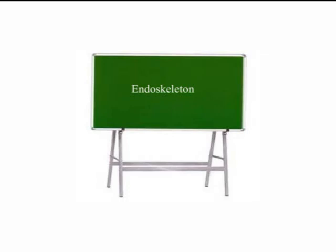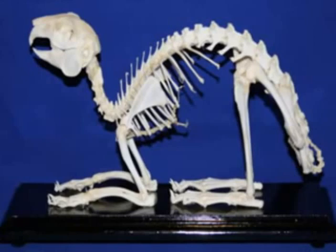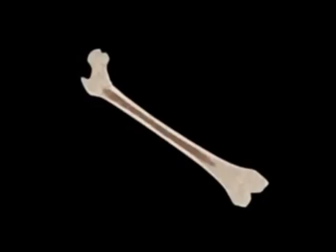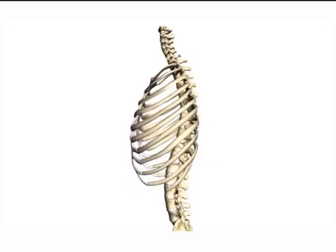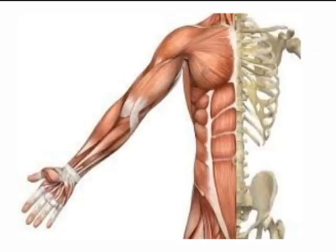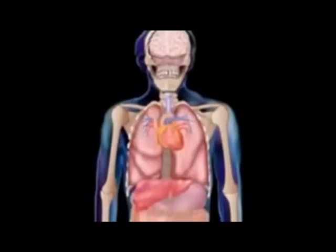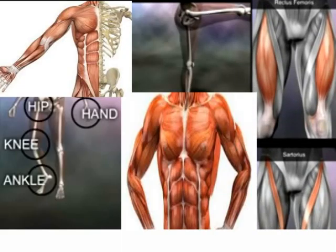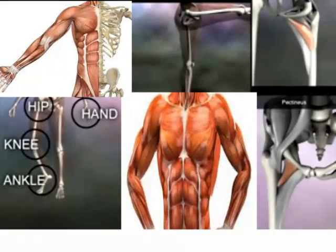The endoskeleton is a characteristic feature of all vertebrates. Unlike the exoskeleton, the endoskeleton is made up of living tissues like cartilage or bone. These tissues grow steadily within the animal and therefore do not necessitate molting to allow for growth. The endoskeleton is essential in supporting the animal body weight and gives the body its shape. It also protects the delicate internal organs like the heart, lungs, brain and other organs from mechanical injury. It provides a surface for attachment of muscles which contract or relax to bring about movement.